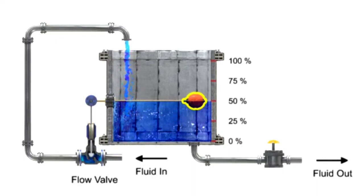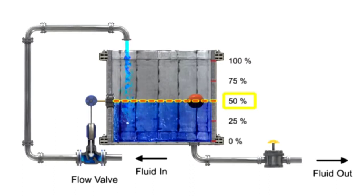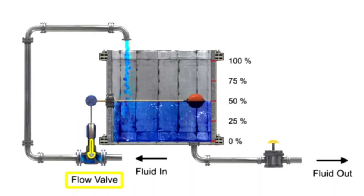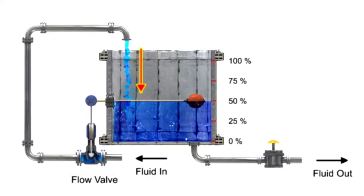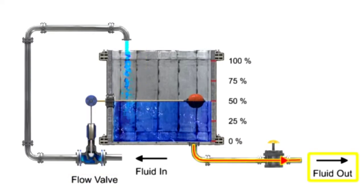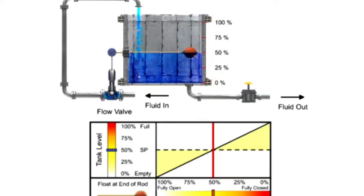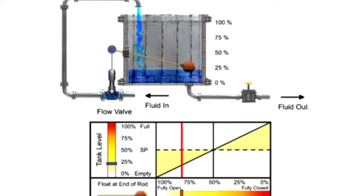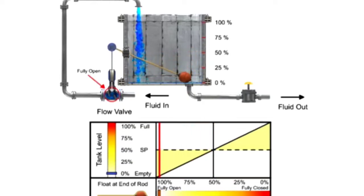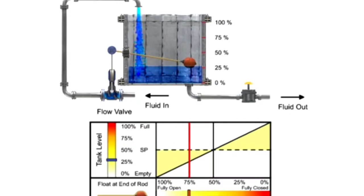The float mechanism is designed so that when the tank level is half-full, the flow valve is open to the position that causes the amount of fluid entering the tank to be equal to the amount leaving the tank. The float on the end of the rod is positioned to meet the minimum and maximum flow capability of the valve. The valve is actuated by the float to a fully open position when the tank level is low, and fully closed when the tank level is full.